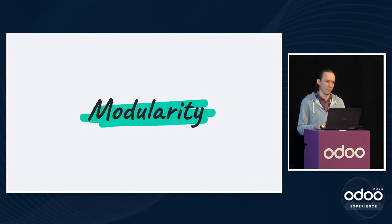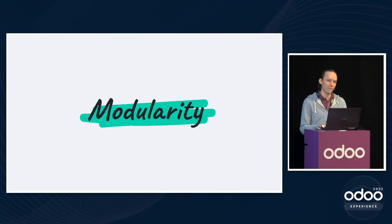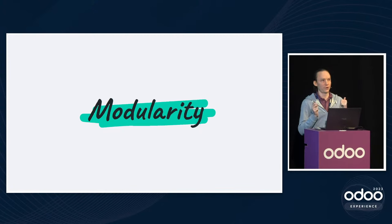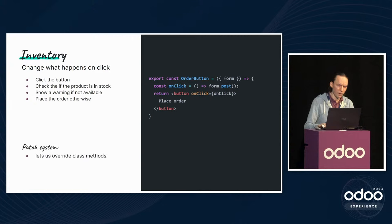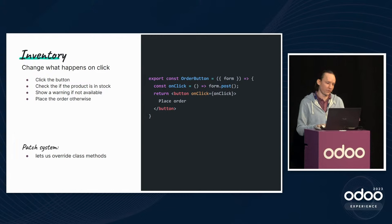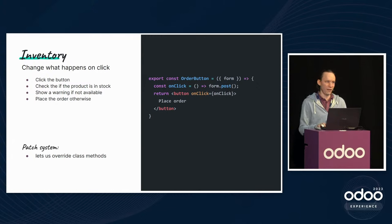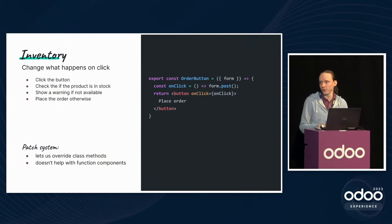This is a core principle of Odoo: modularity. Modules need to integrate efficiently with each other without being a huge monolith — customers shouldn't pay the price of inventory management if they don't need it. In React, you can't really do this with a function component. Odoo has a patch system that allows modifying objects or classes in place, but with function components there's no way to get at the existing logic.